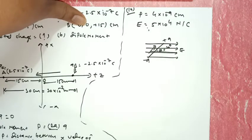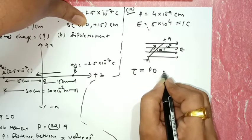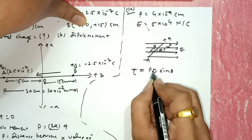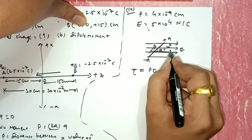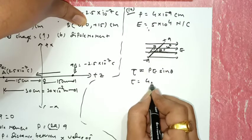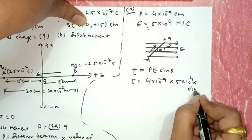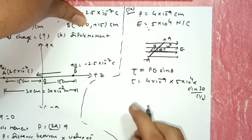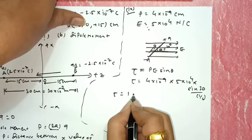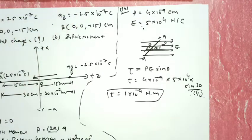We need to find the torque. From theory, torque τ = PE sinθ, where θ is the angle between P and E. So τ = 4 × 10⁻⁹ × 5 × 10⁴ × sin30° = 4 × 10⁻⁹ × 5 × 10⁴ × 1/2 = 1 × 10⁻⁴ newton·meter.